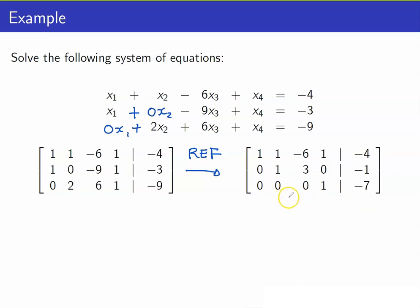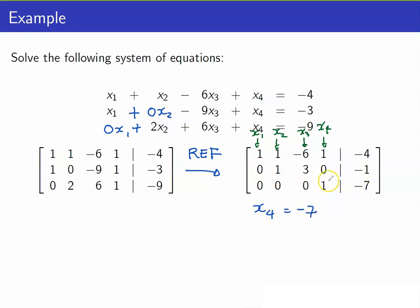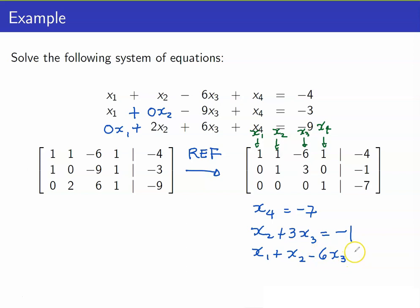Let us interpret this as a system of linear equations. Recall that this column would represent x1, this would correspond to x2, x3, and x4. Our last row — we always start with the last row — means that x4 is equal to negative 7. The second row means that x2 plus 3x3 is equal to negative 1. The first row is saying that x1 plus x2 minus 6x3 plus x4 is equal to negative 4. And we now substitute.